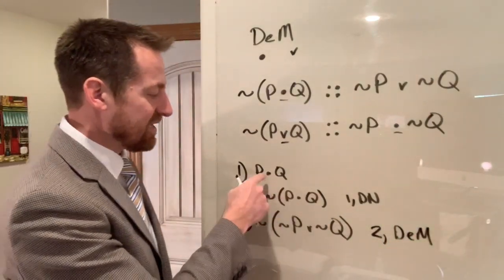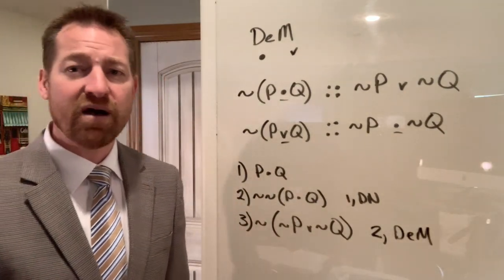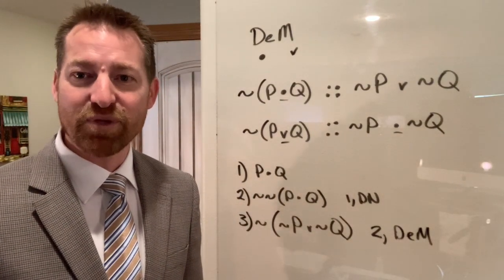Of course, we could have done this if this had been a disjunction as well. Often a very handy rule to use when you're trying to complete a proof.